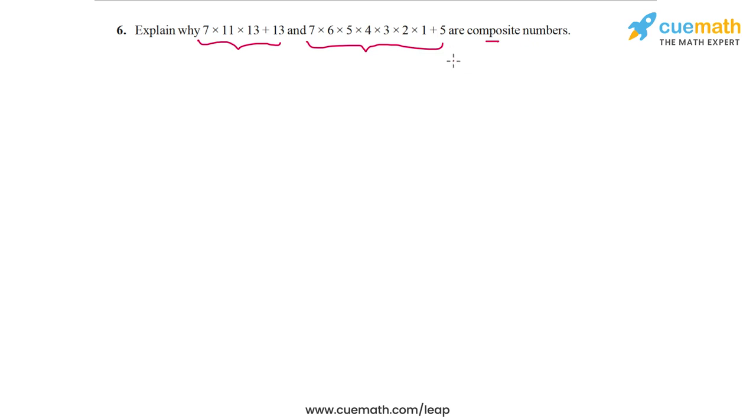In other words, we have to demonstrate that these two numbers can be written as products of smaller numbers, making them composite and not prime.